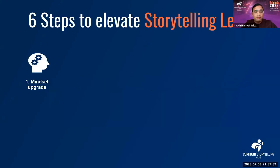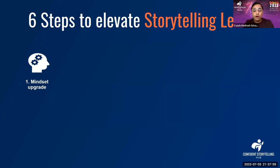Number one is mindset. As they say, skill set without mindset leads to upset. If you don't have the right mindset, you might not be able to elevate your level. We have seen three examples today — people who volunteered, who said yes and took the risk to come and present their story. People may like it, people may not like it, and that's completely all right. So the first thing is you have to upgrade your mindset.